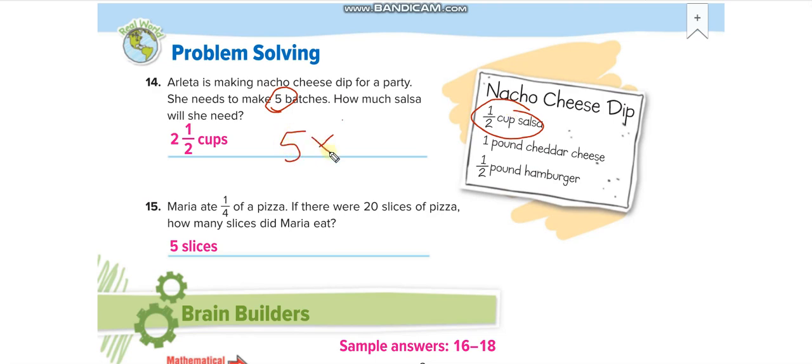That is equal to 5 over 2. When you convert it into a mixed number, because this is an improper fraction, it will be this. How many 2 you can take out from 5? 2. And the remainder, 1 over 2 cups.